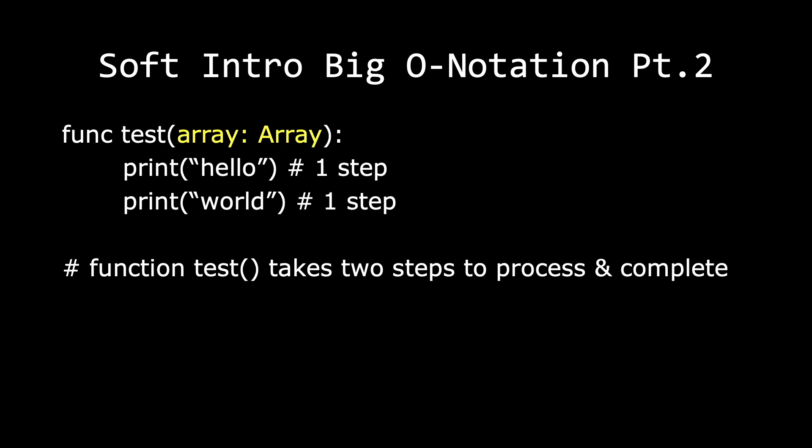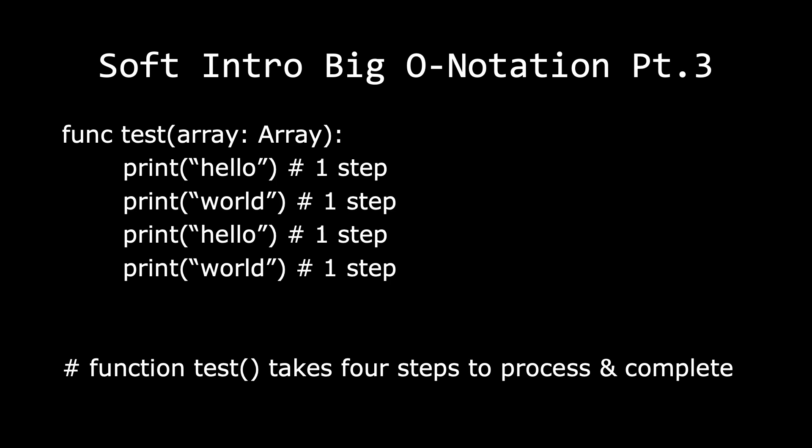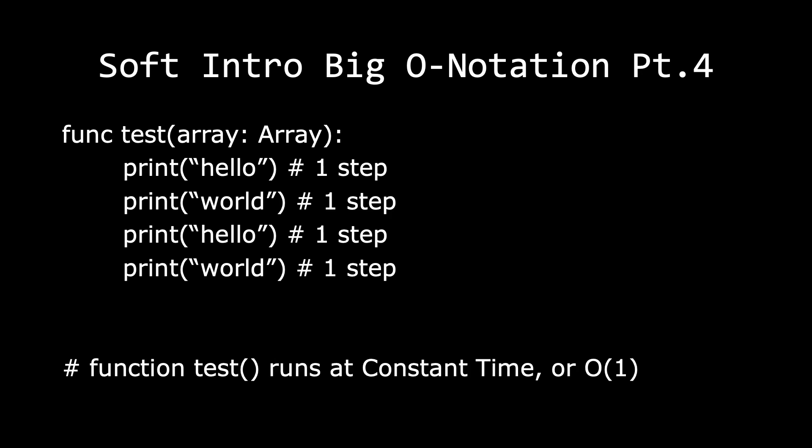Now let's change this up a bit and add a parameter to our function. Trick question: how long does our function take to run if we pass an array with 1000 items? The answer is it still takes two steps to complete, despite having an array with 1000 items passed in. Now let's add two more print statements — our code now takes four steps. Rather than always saying how many steps a function takes, we can say our code runs at constant time. In Big O notation, we'd say O(1), because no matter how large our array grows, our function takes the same number of steps. The number of steps does not grow or shrink — therefore, it runs in constant time.